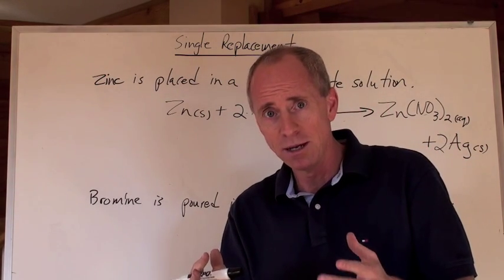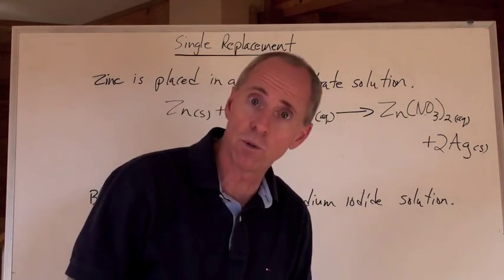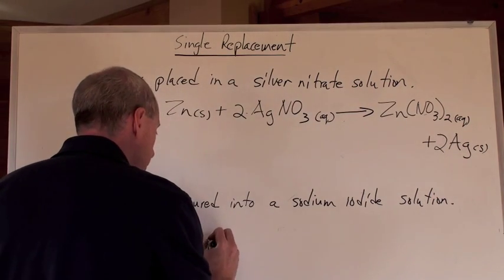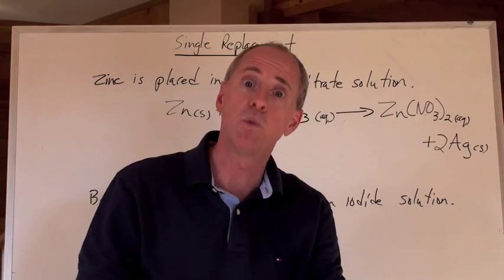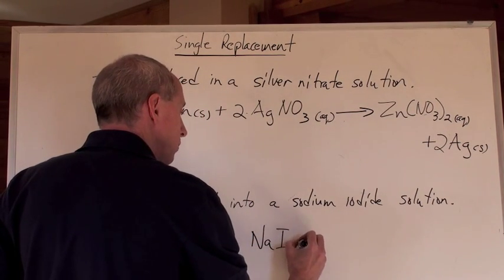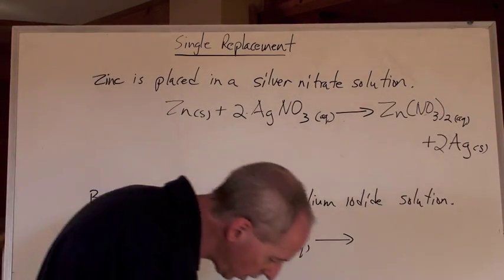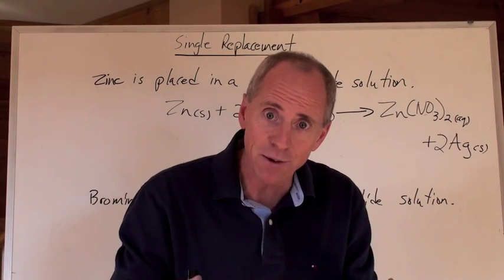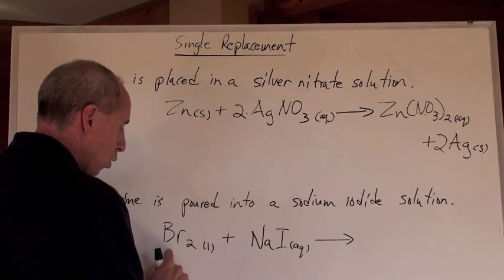Now let's do another single replacement reaction, but this time we're replacing the negative ion — the anion. Bromine is poured into a sodium iodide solution. Bromine is Br2 because it's in group 7, and it's a liquid at room temperature. Sodium iodide: sodium is Na positive, and I in group 17 is negative 1 — not I2, because it's bonding to something. So the compound is NaI aqueous because it says solution. Now some people will be tempted to put Br with I, but both of those are anions — negative ions both in group 17. You do not put them together. It's cation with anion, and the cation is always written first.